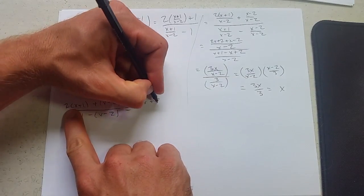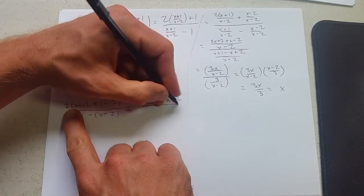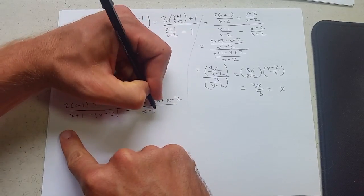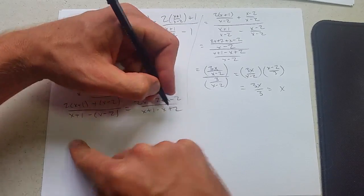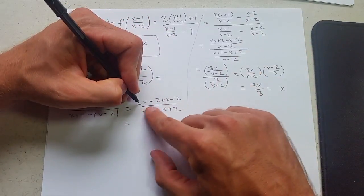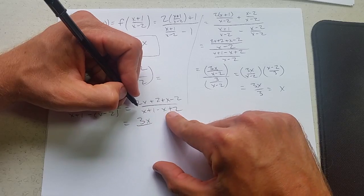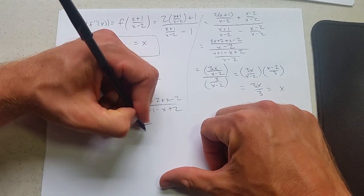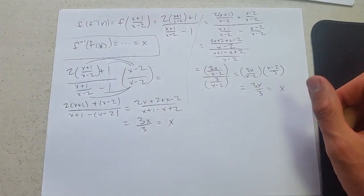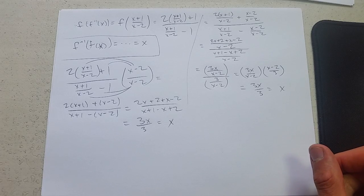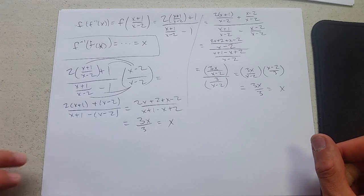So we get 2x plus 2 plus x minus 2 divided by x plus 1 minus x plus 2. 2x plus x is 3x plus 2 minus 2 cancels, x minus x is 0, 1 plus 2, 3. And we get down to x. This can save you a small amount of time, but it's still definitely not easy.